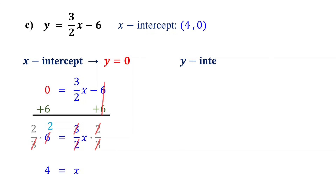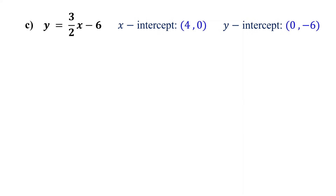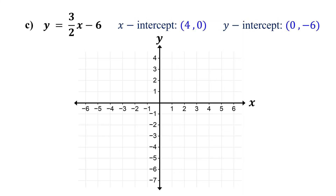To find the y-intercept, set x to 0 and solve for y. This simplifies to y equals negative 6. So, the y-intercept is 0 comma negative 6. Now, plot the intercepts on the coordinate plane. If you need a refresher on plotting points, check the link in the description. Finally, draw a line through these points.